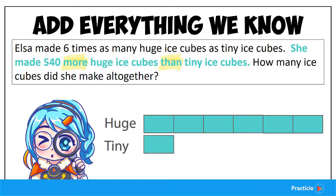So which one do you think is the one with the bigger number? The huge ice cubes — you are absolutely correct. And this happens to be the object that comes exactly after the word 'than'. So now we know that when we compare the huge ice cubes to the tiny ones, there are 540 more huge ice cubes than the tiny ones.